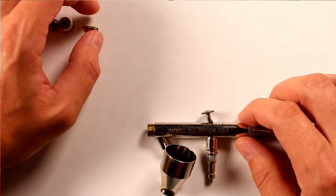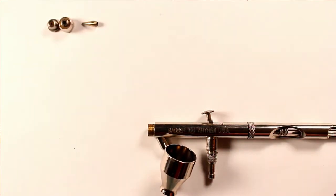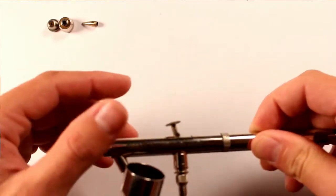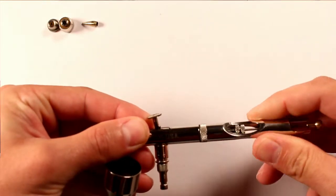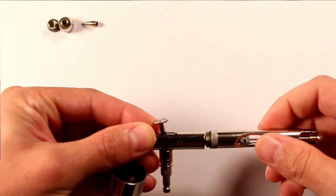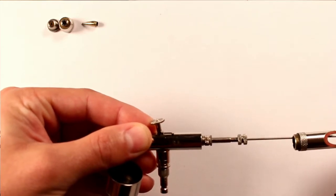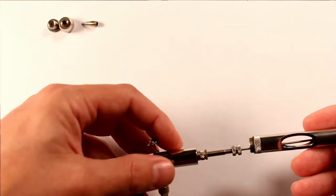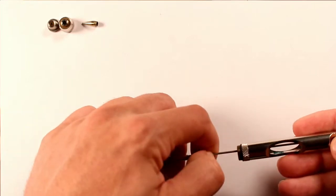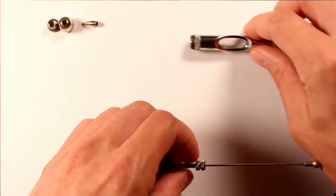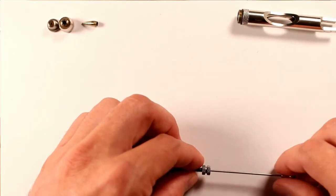And then the next thing I want to take off is the pro section series cutaway handle, which is right here. And technically you take the needle with it, but I'm going to leave that in for right now so it keeps the trigger in.